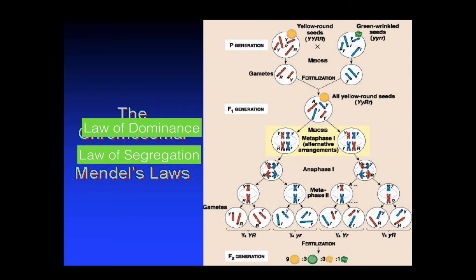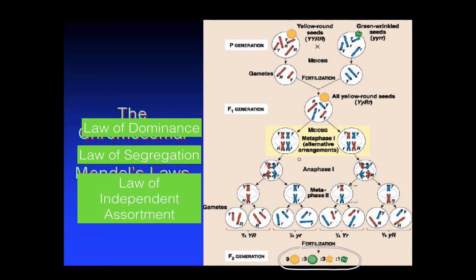Mendel's Law of Segregation is how we get the 9-3-3-1 ratio down here at the bottom. This 9-3-3-1 ratio is produced by Mendel's Law of Segregation working with Mendel's Law of Independent Assortment. So overall what you want to see in this slide is that Mendel's three laws are actually caused by what happens during Meiosis I and Meiosis II and fertilization.